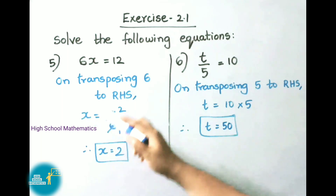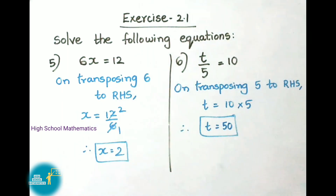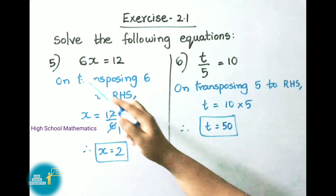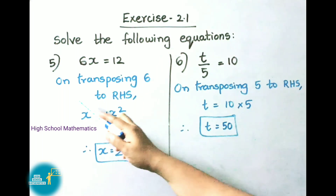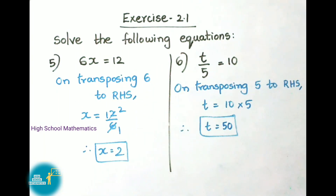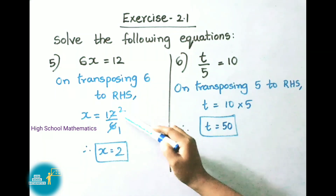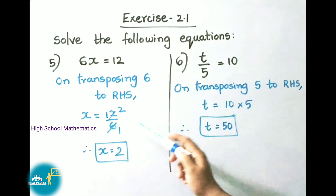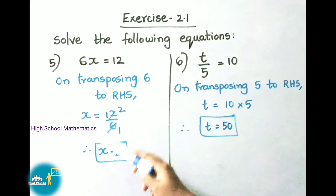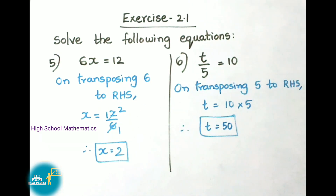See now question number 5: 6x equals to 12. To remove this 6 we are going to do transposing. On transposing 6 to RHS, the multiplication becomes division, so x equals to 12 by 6. Since 6 twos are 12, therefore x equals to 2.